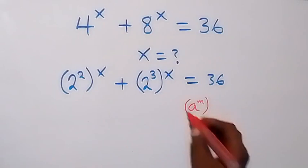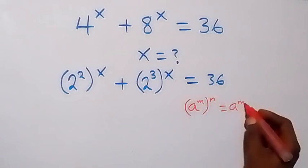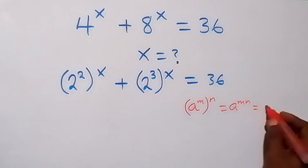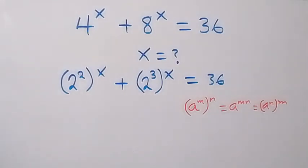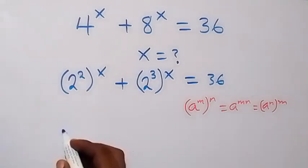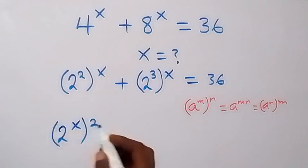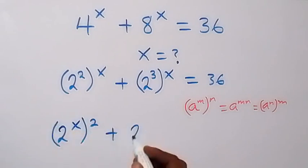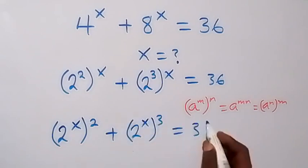...it is the same thing as a raised to power m times n, which can also be written as a raised to power n then raised to power m. So we can interchange the powers, and this becomes 2 raised to power x, then raised to power 2, plus 2 raised to power x then raised to power 3, which equals 36.